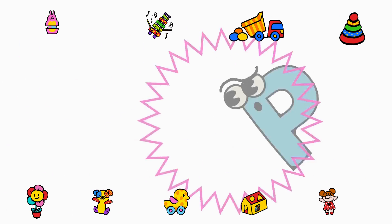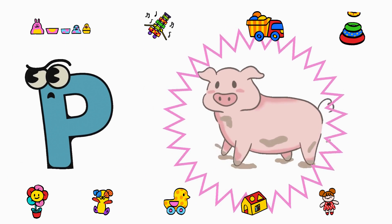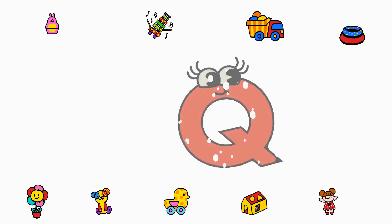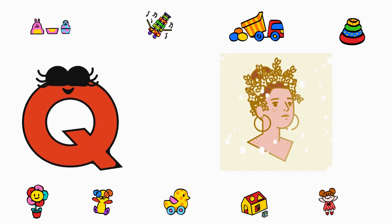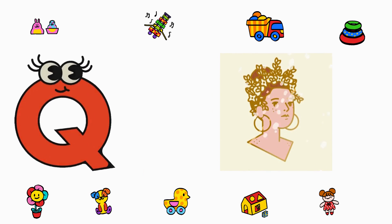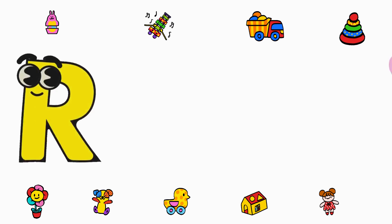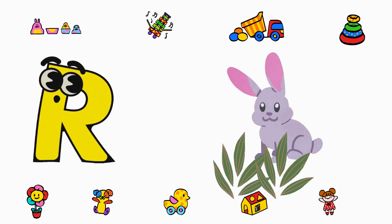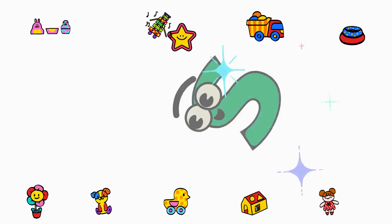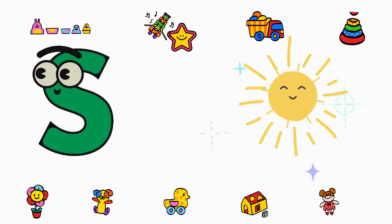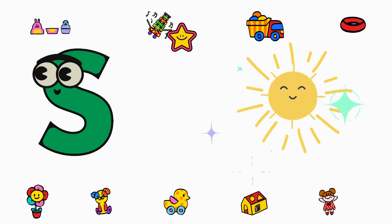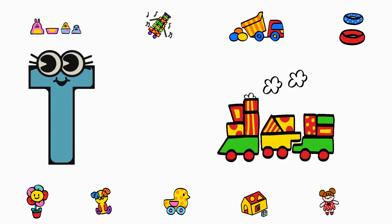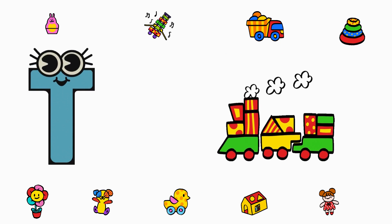P is for Pig. Q is for Queen. R is for Rabbit. S is for Sun. T is for Train.